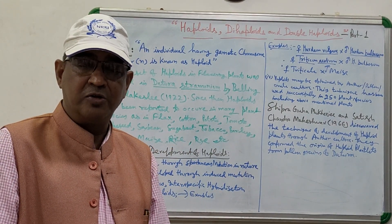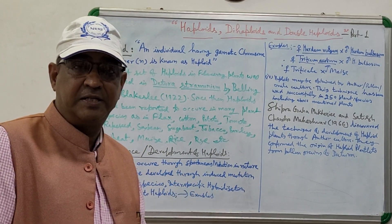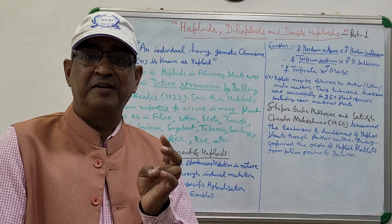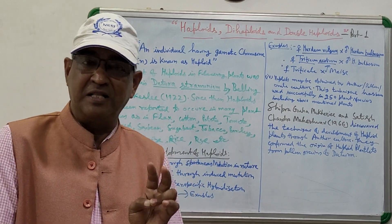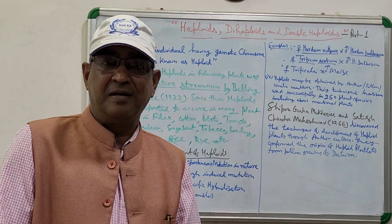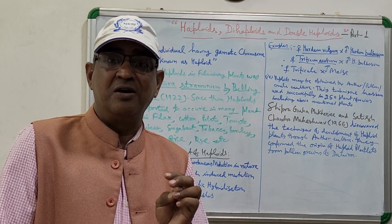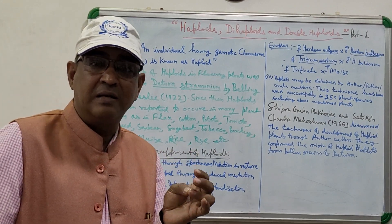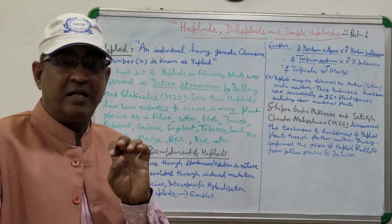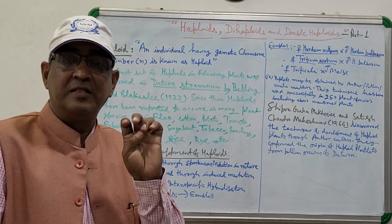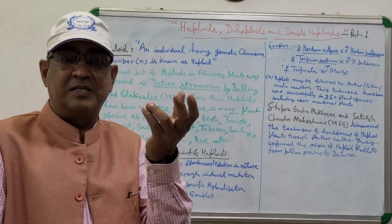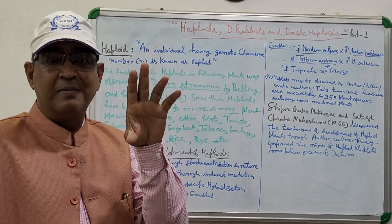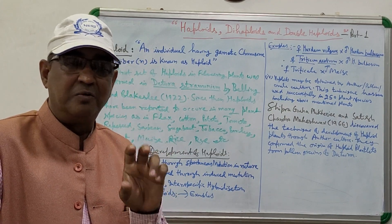Or you can induce haploids through induced mutation, or go for interspecific hybridization. If nothing is possible, you go for tissue culture. The tissue culture method is applied here for obtaining haploid plants — particularly anther culture, pollen culture, or ovule culture. As you know, pollen, anthers, and ovules all have the gametic chromosome number. If you obtain plants from these, the resulting plant will be a haploid plant because it has the gametic chromosome number.